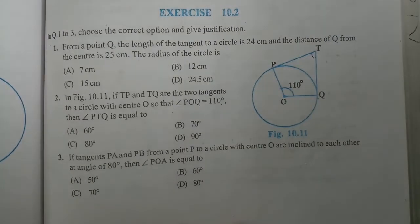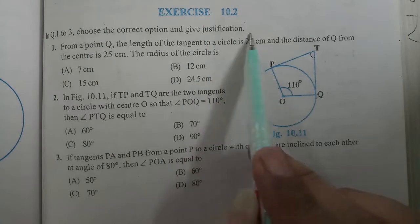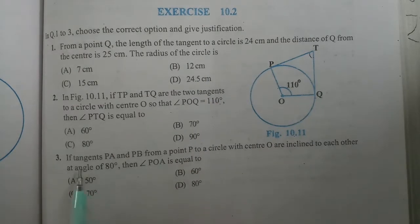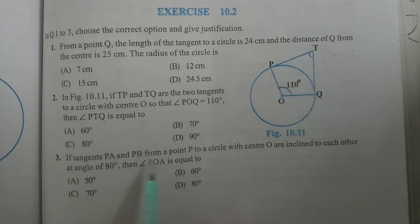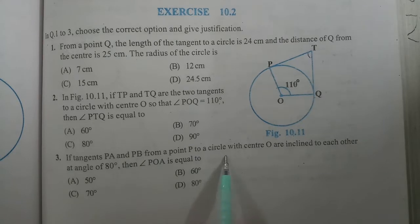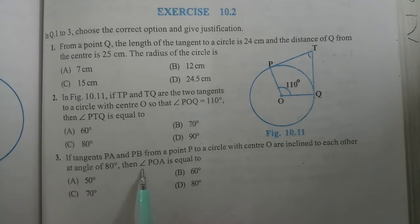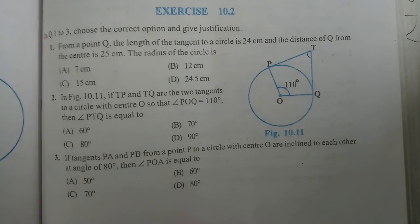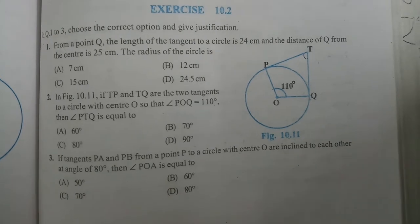Hello students, in this session we will continue with Exercise 10.2, question number 3. If tangents PA and PB from a point P to a circle with center O are inclined to each other at an angle of 80 degrees, then angle POA is equal to which of the following? First let's draw a figure and understand the question, then we will solve it.